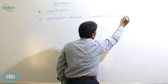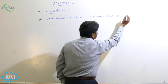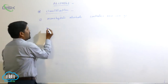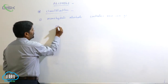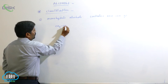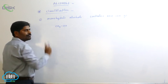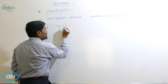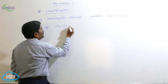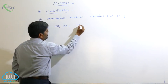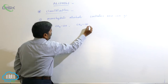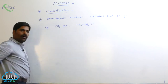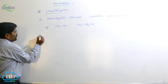For example, CH3OH is methyl alcohol, and the second example is ethyl alcohol. These are monohydric alcohols, each containing one OH group.